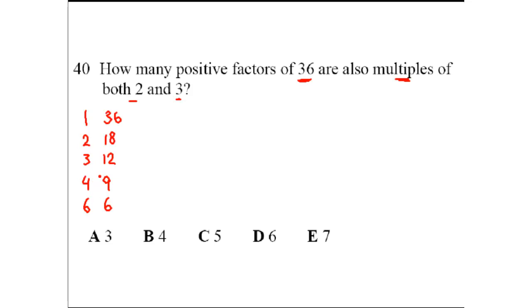How many of these are also multiples of 2 and 3, or are also multiples of 6? First of all, we have the number 6. It's a multiple of 6. And 12 is a multiple of 6. 18 is a multiple of 6. And 36 is a multiple of 6. How many do we have? 1, 2, 3, 4. So the answer is B.